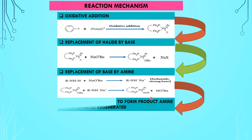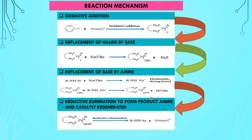The fourth step is reductive elimination to form the product. In this step the amine is formed and the catalyst is regenerated. The metal ion is removed and a new single bond forms — we can also call this the reverse of oxidative addition. The catalyst is regenerated, a new sigma bond is formed, we get the coupled product, and the catalyst is regenerated.